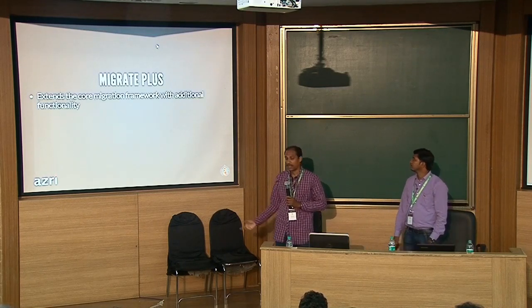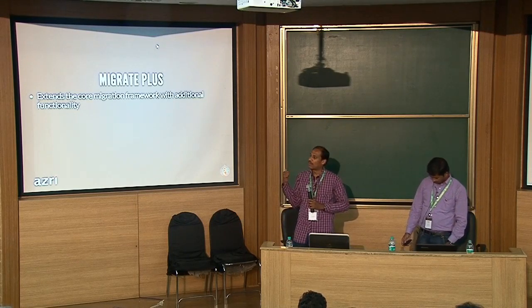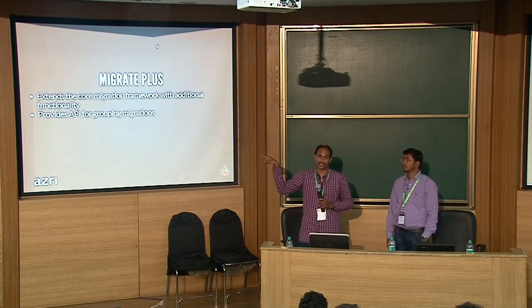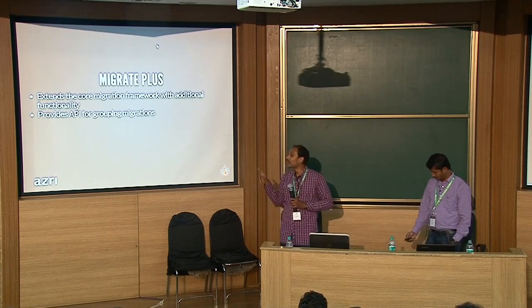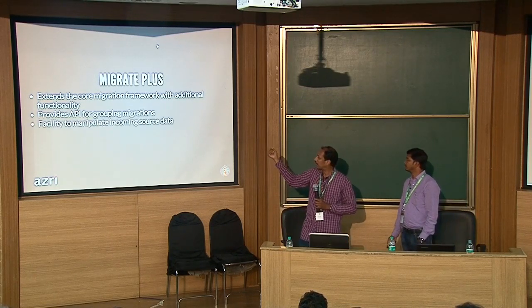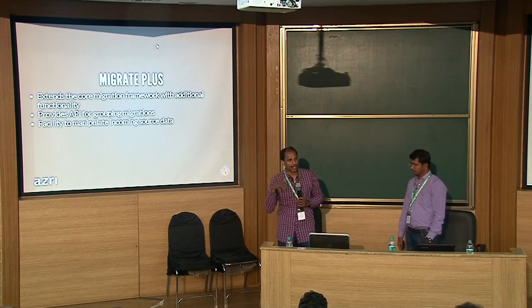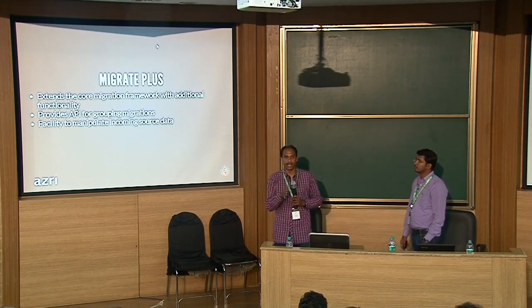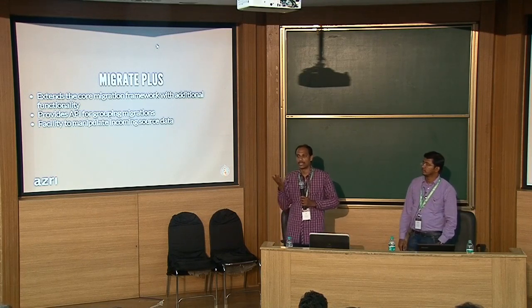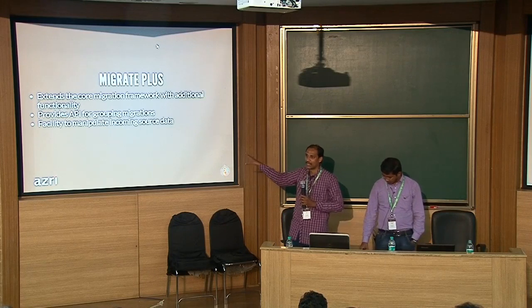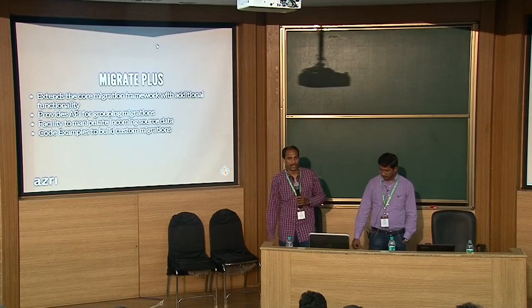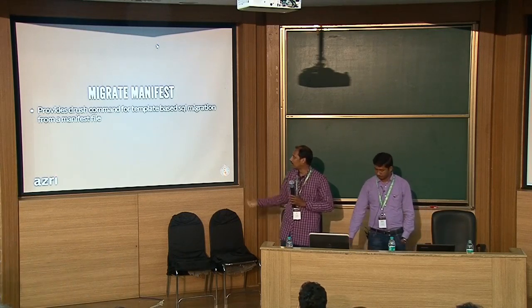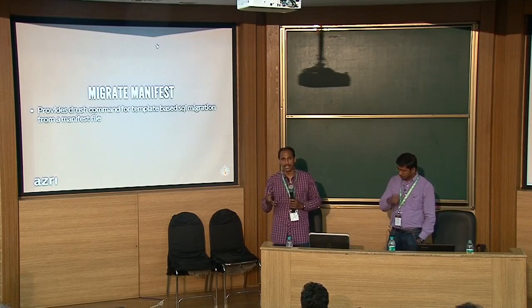Migrate plus is another contributed module, required if you need to write your own custom migration plugins. It extends the core migration framework and provides an API for grouping migrations — so you can group several migrations and run them together. It also lets you manipulate incoming source data before migration and provides examples. Migrate manifest gives you a Drush command to create a migration template YAML file and run it.